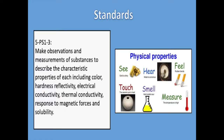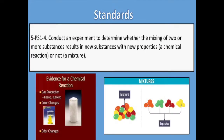Well, I have to say that was a great song for our new unit, Matter and Its Interactions. There are two standards that you'll be addressing. The first standard is 5-PS1-3: Make observations and measurements of substances to describe the characteristic properties of each, including color, hardness, reflectivity, electrical conductivity, thermal conductivity, response to magnetic forces, and solubility. And 5-PS1-4: Conduct an experiment to determine whether the mixing of two or more substances results in new substances with new properties — a chemical reaction — or not, a mixture. You should explore both standards with many investigations found on Atlas, but we're going to be focusing on the second standard for the video today.